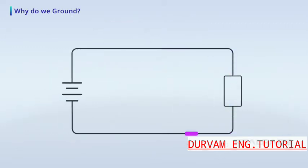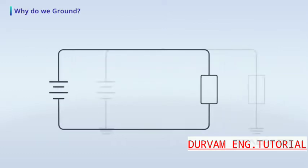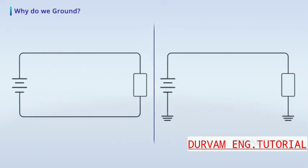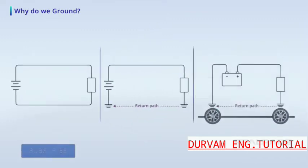Every electrical circuit needs to be complete for current to flow. In many applications, grounding provides a circuit return path. For example, your car chassis is a common ground for all return current to the battery.